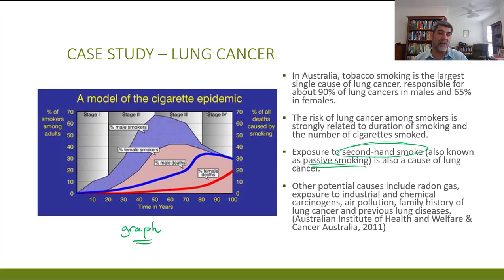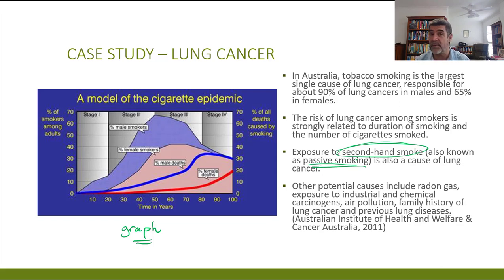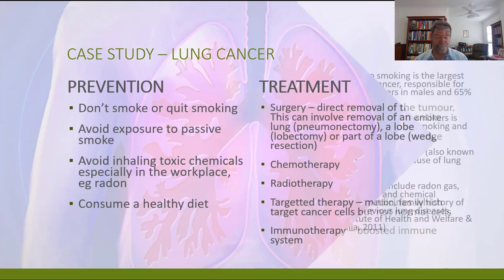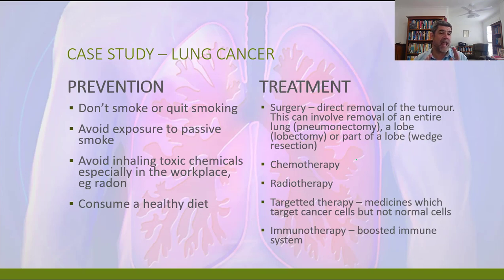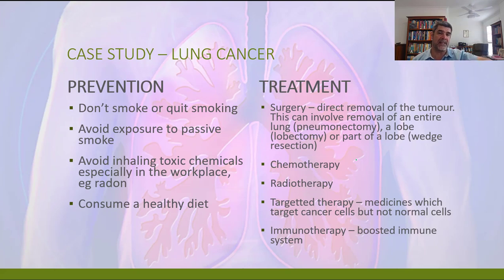Cigarette smoke is not the only substance that can increase the risk of lung cancers. There are several other industrial and environmental gases, chemicals, and factors that can also contribute to increased levels of lung cancer. So remember, what we're trying to do is look at prevention, treatment, management, and research. As you look at your case study, go firstly through prevention — how do we prevent lung cancer?